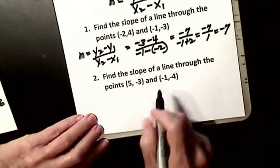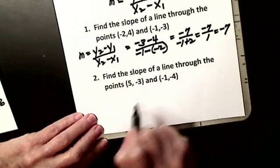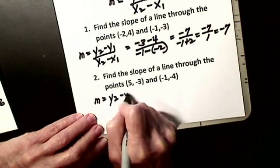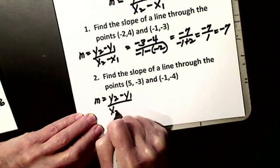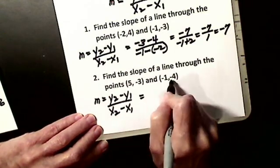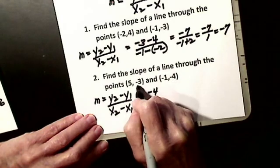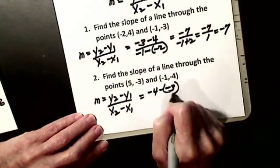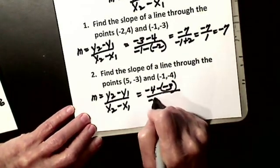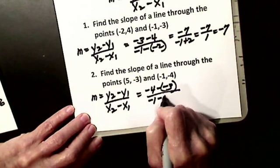We'll do another one. I have to find the slope of a line through these two points. I'll write my formula down, y2 minus y1 over x2 minus x1. Now, I take my y, which is minus four, this y. So it's minus minus three, divided by my minus one, minus five.